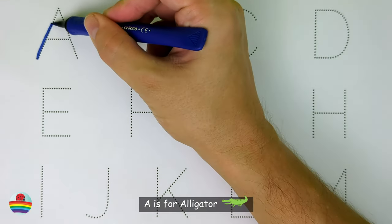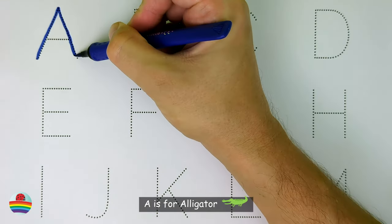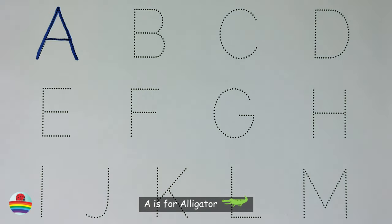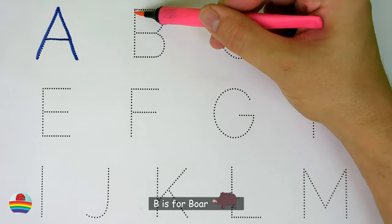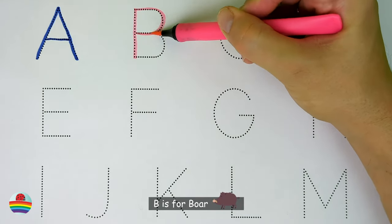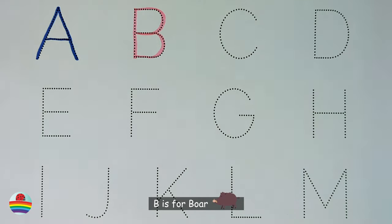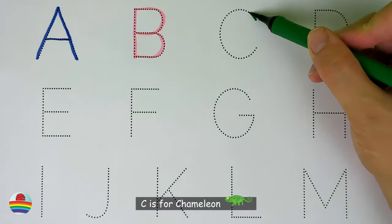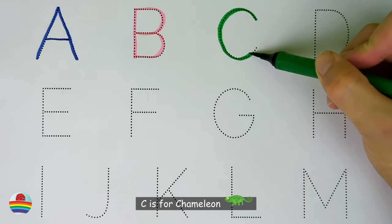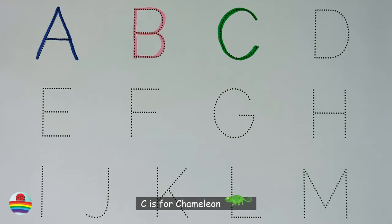A. A is for Alligator. A. B. B is for Boar. B. C. C is for Chameleon. C.